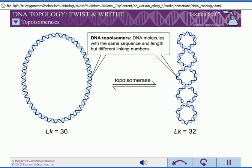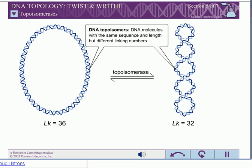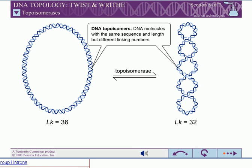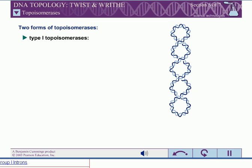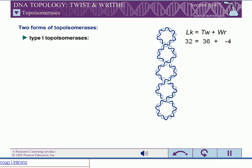Topoisomerases are enzymes that change the linking number of a DNA molecule. There are two types of topoisomerases.